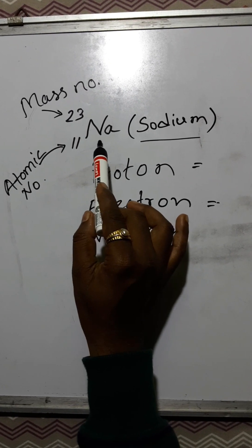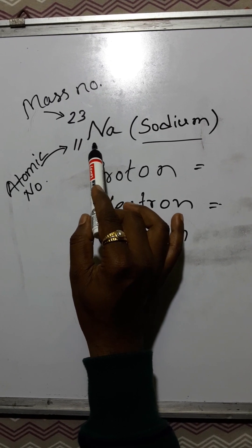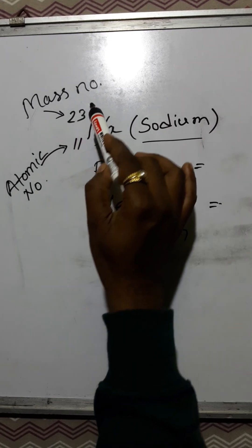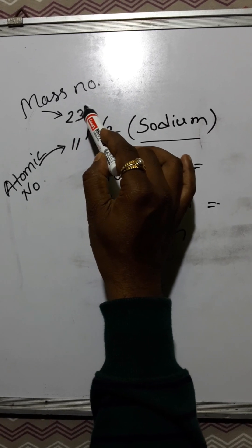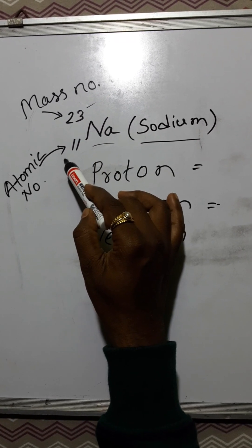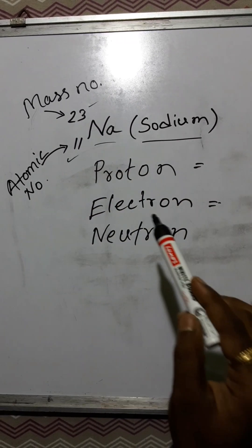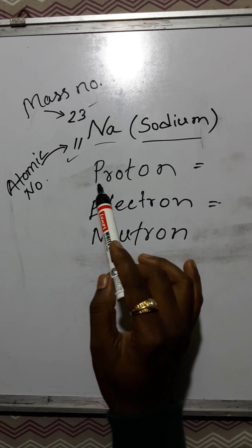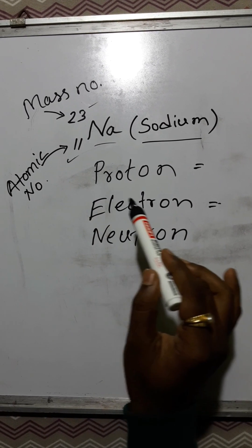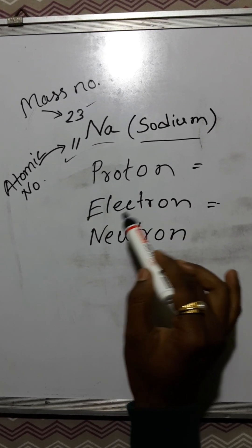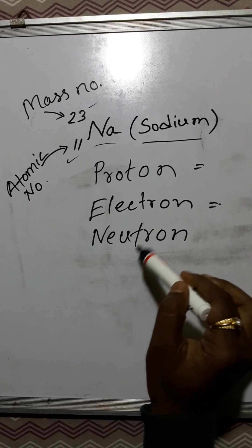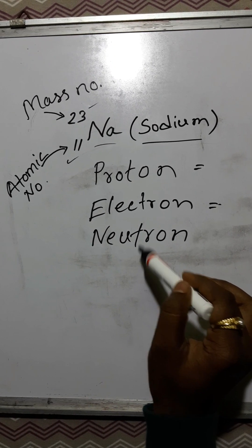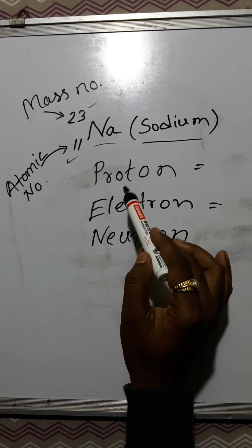Na is the symbol of sodium. Here, the upper number represents mass number and the lower number represents atomic number. Now, we have to find out the number of protons, number of electrons, and number of neutrons.